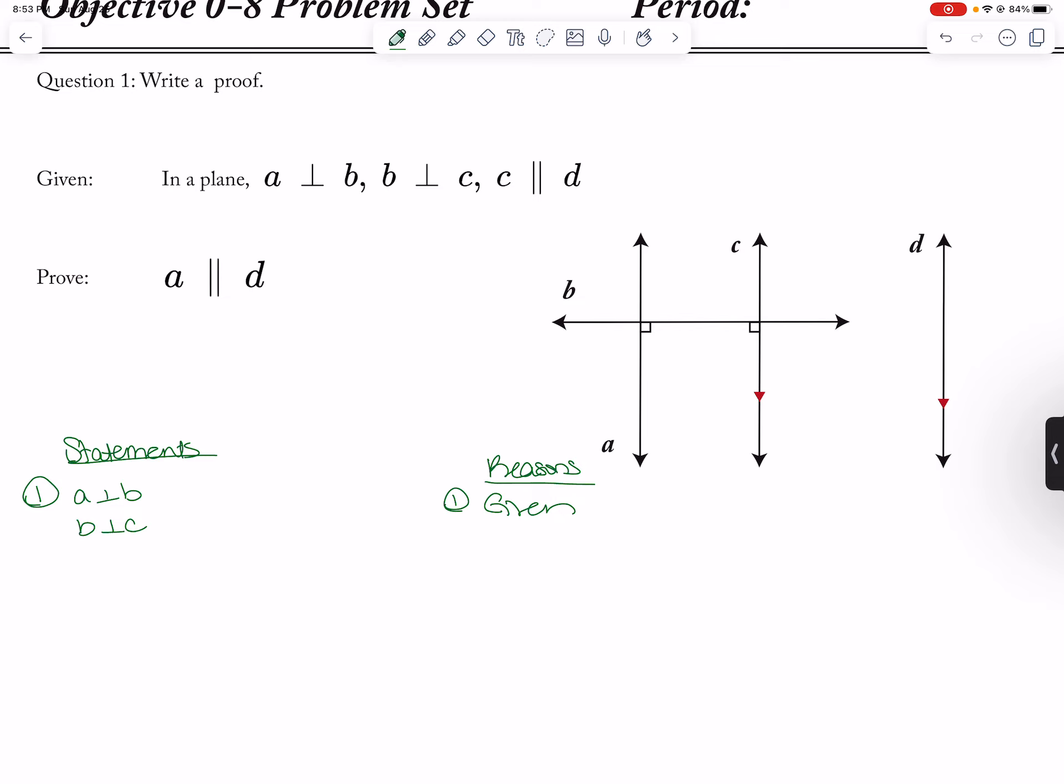If that's the case, then A is parallel to C because, I guess you could write it in a plane. If two lines are perpendicular to the same line, then they are parallel.